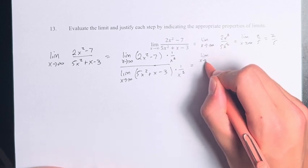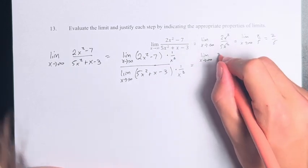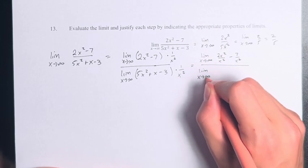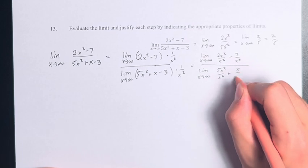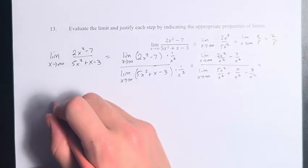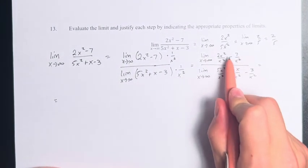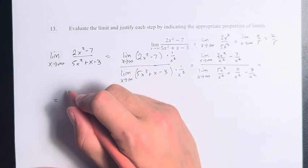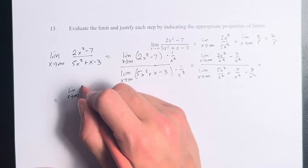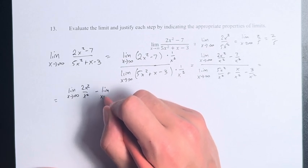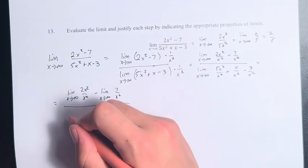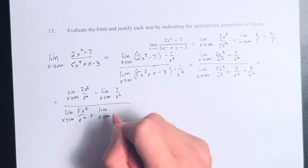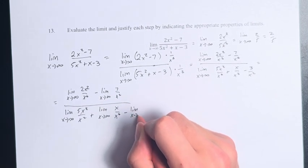We have the limit as x approaches infinity of 2x squared divided by x squared, minus 7 over x squared. And we're going to do the same thing in the denominator: 5x squared over x squared, plus x over x squared, minus 3 over x squared. Since this is a sum and difference in the numerator and denominator, we can split the terms with individual limits.